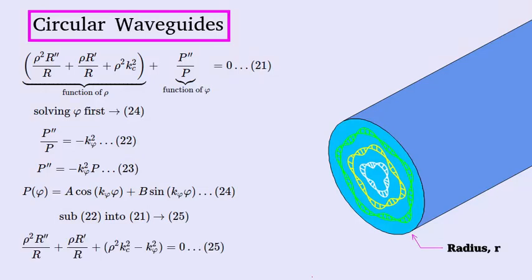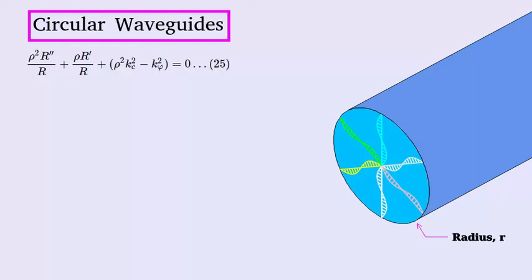Which will give us this equation in terms of rho. So now to solve this equation. And it is a function of rho, which is the value of the electric field as it moves away from the center of this waveguide. This is a Bessel's differential equation, and so can be solved using the Bessel's functions.